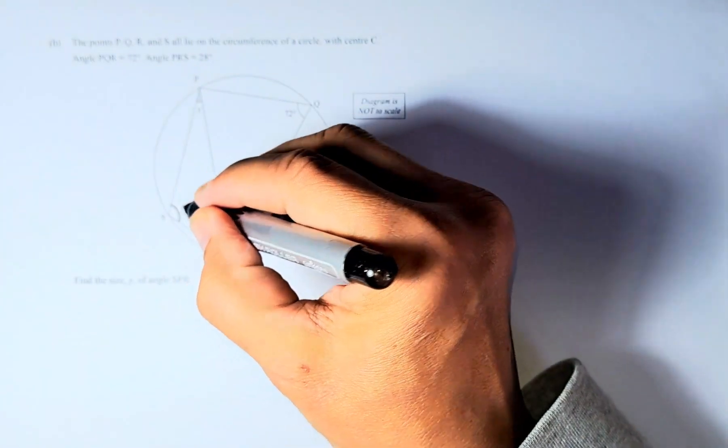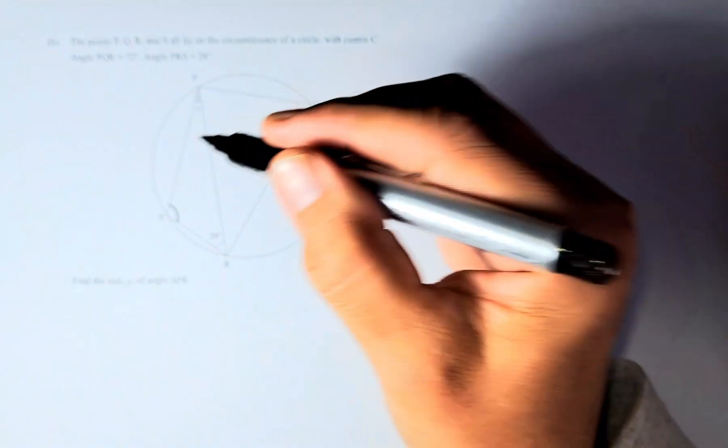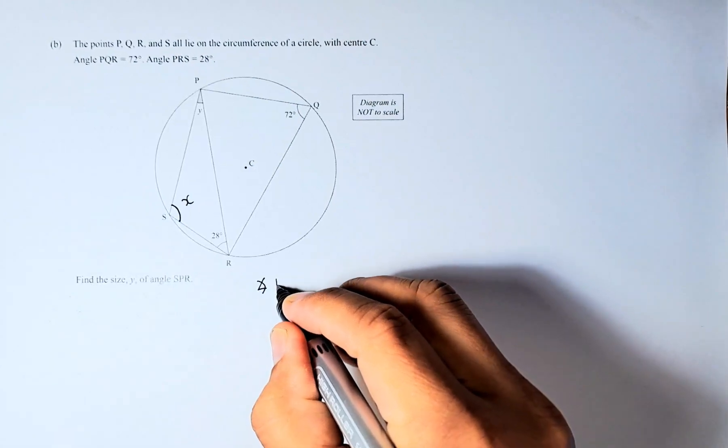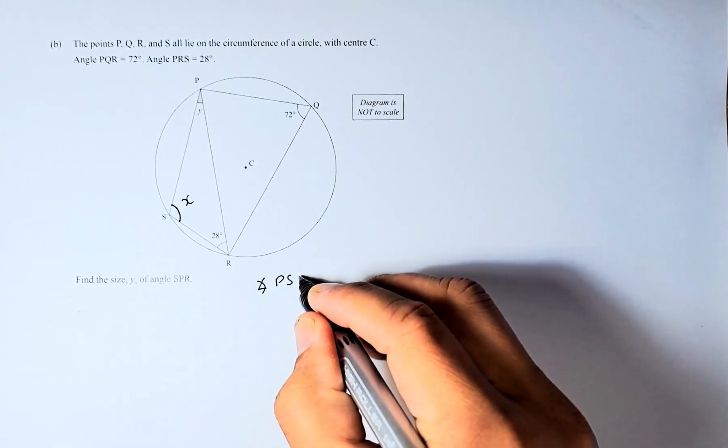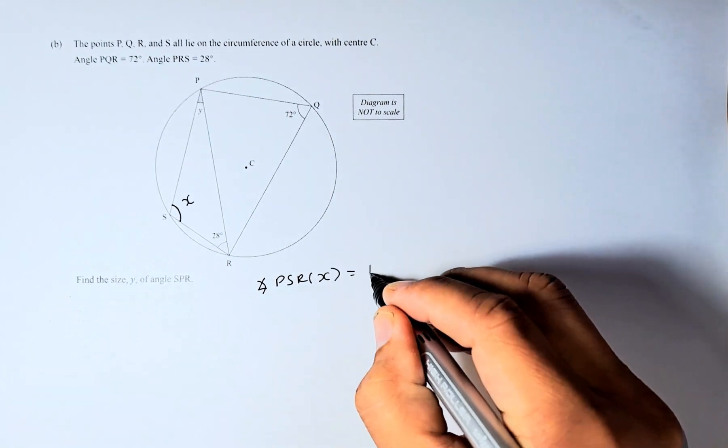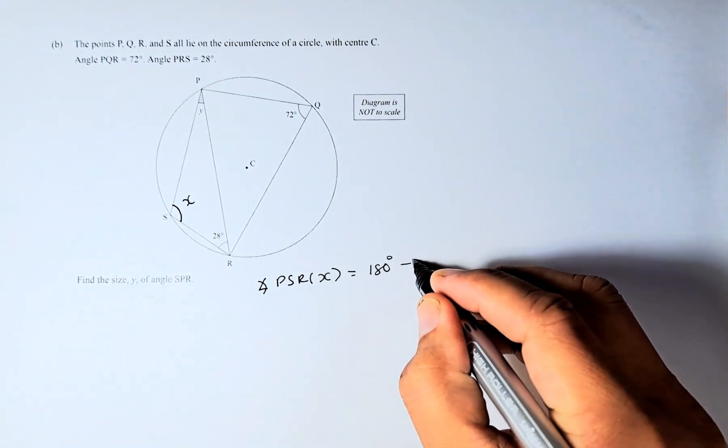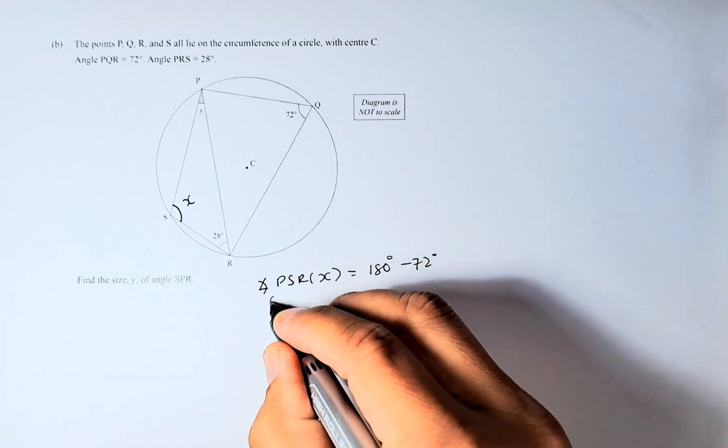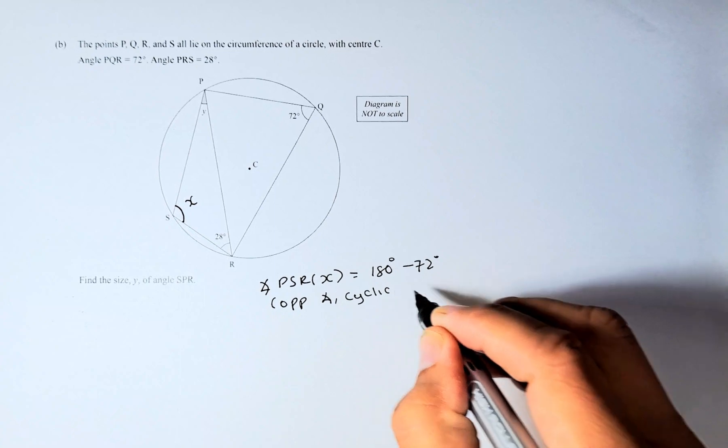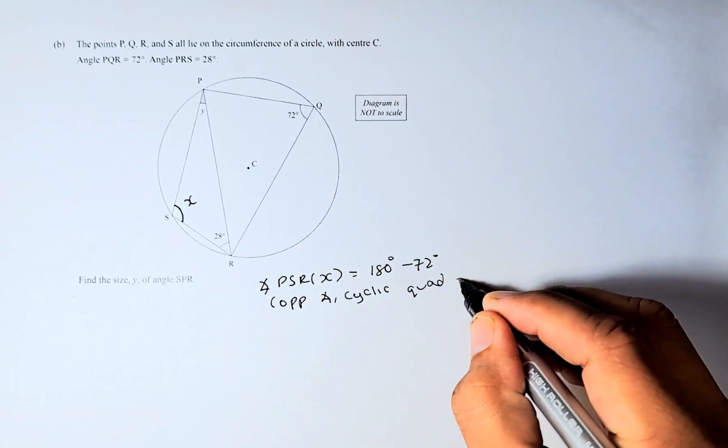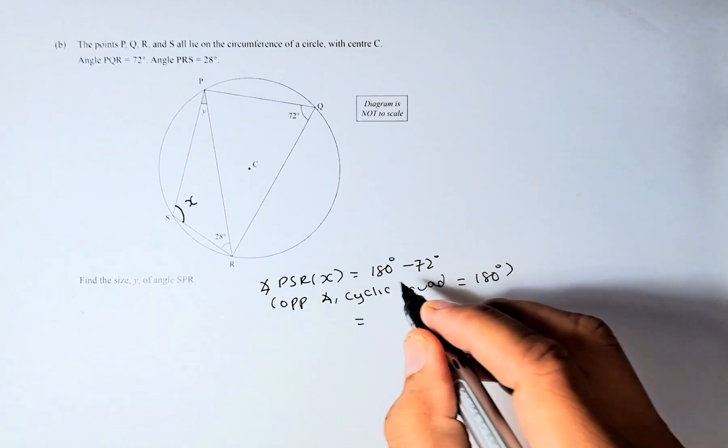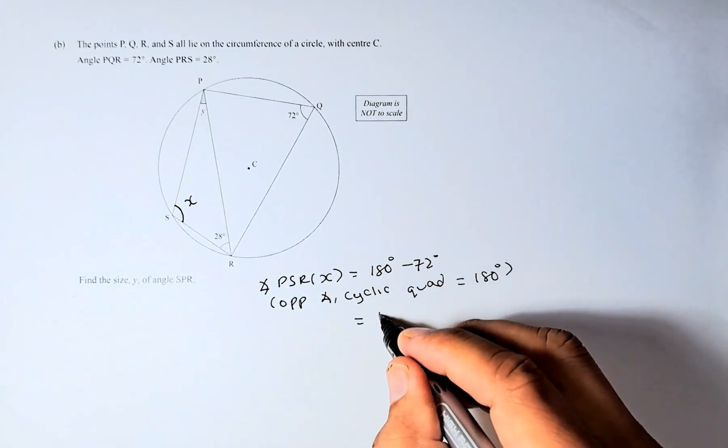Angle X, or angle PSR, is going to be 180 degrees minus 72 degrees, because opposite angles of a cyclic quadrilateral add up to 180 degrees. So 180 minus 72 equals 108 degrees.